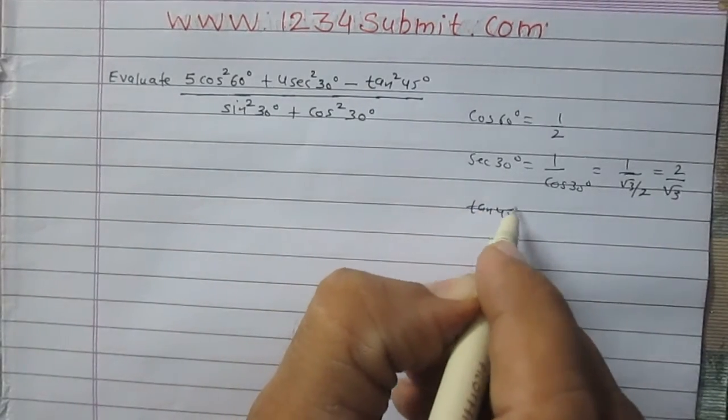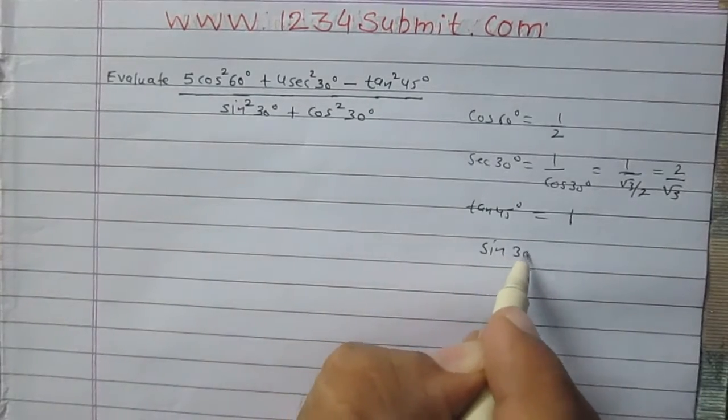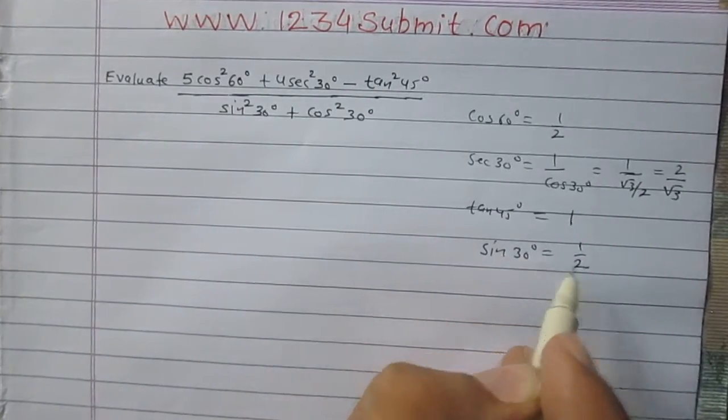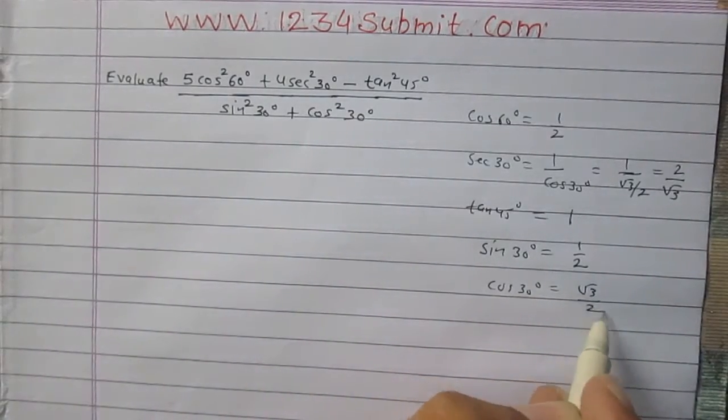Tan 45 degree is 1, sine 30 degree is 1 by 2, and cos of 30 degree is root 3 divided by 2.